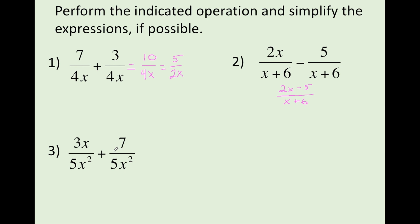Problem three: common denominators, add or subtract the numerators, combine like terms if possible. When we add these together, we have two 5x squares, but we only write one under here.